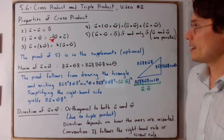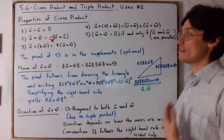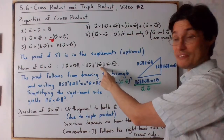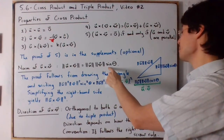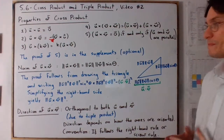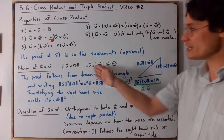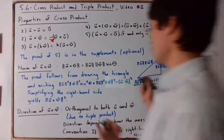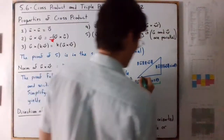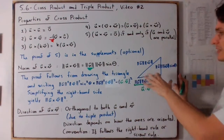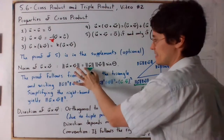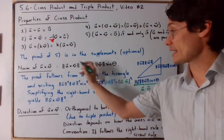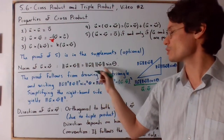Now let's talk about the norm of u cross v. The norm is equal to the norm of u times the norm of v times the sine of the angle theta between the two vectors. I drew a triangle on the board to illustrate this — the norm of u cross v equals the norm of u times the norm of v times sine theta.